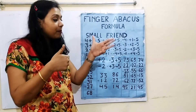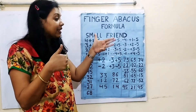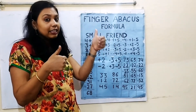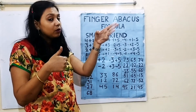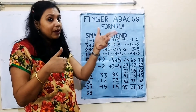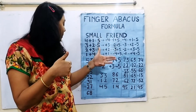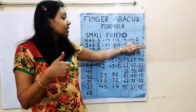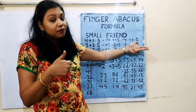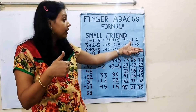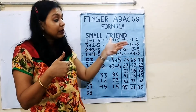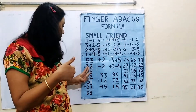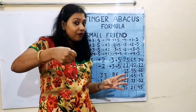Now minus 45: first minus 40. We cannot do that directly — closing one group gives minus 30, closing another gives minus 50. So the formula for minus 40 is plus 10 minus 50. Then minus 5: close the thumb.